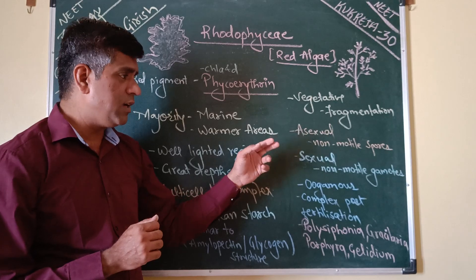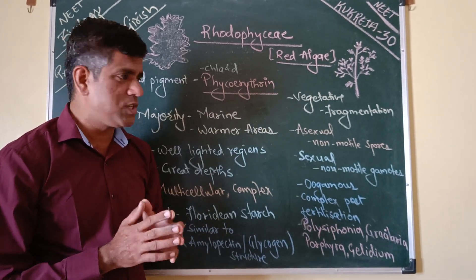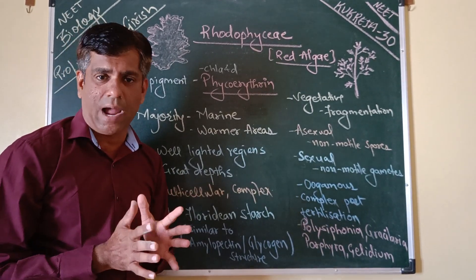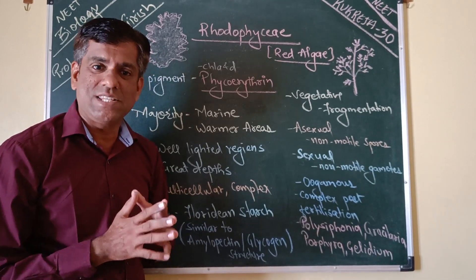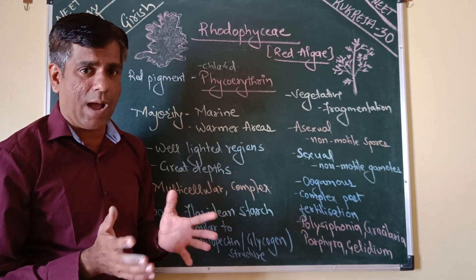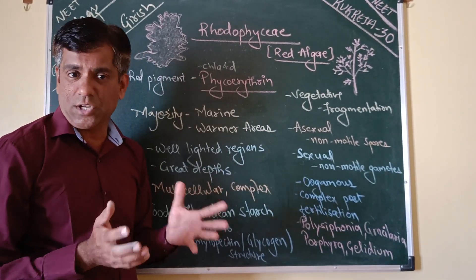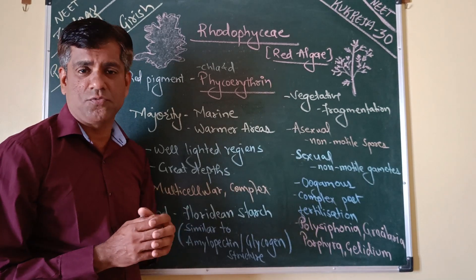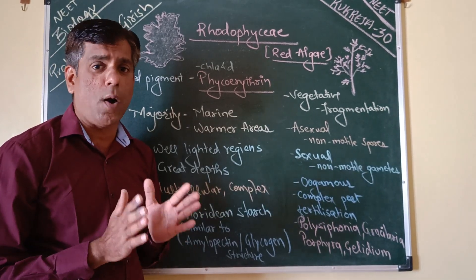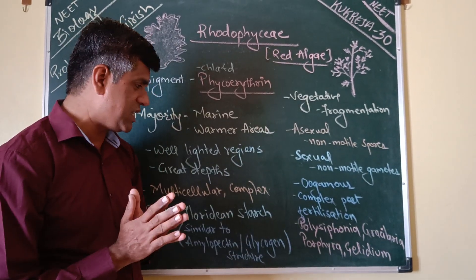Asexual reproduction is by non-motile spores and sexual reproduction is by non-motile gametes, so overall motile structures are absent. Sexual reproduction is mainly oogamous, followed by complex post-fertilisation changes.